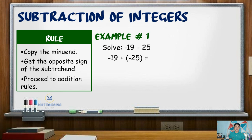Since both integers have negative signs, we just add the values: 19 plus 25 is 44. We affix negative to the sum. Hence, the difference is negative 44.